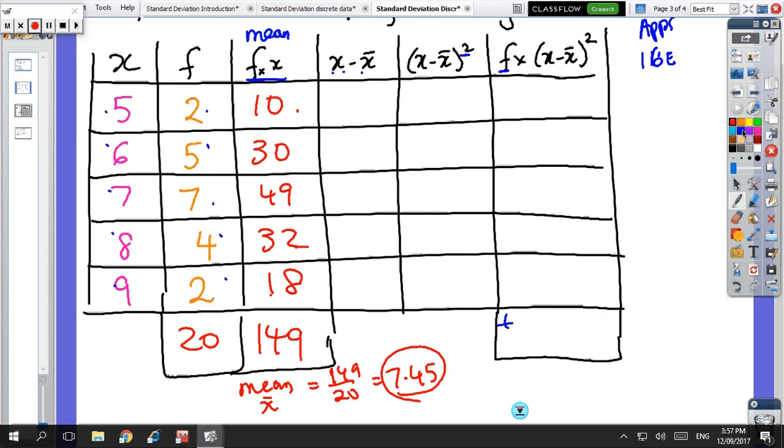Okay, so on the next column, we're going to take every score and minus 7.45. So we've got minus 2.45, minus 1.45, minus 0.45, and then we get to here, we're going to subtract again, but now we've got 0.55 and then 1.55. So that's the x minus x bar column.